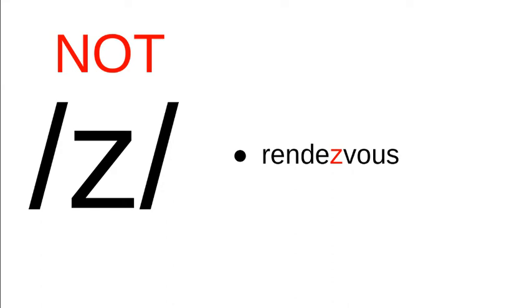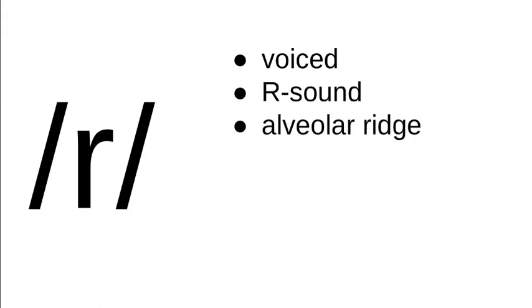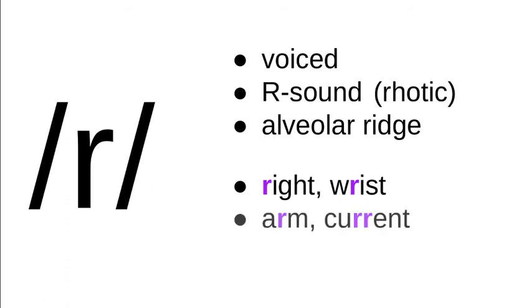The next sound, lowercase r represents the r sound. This sound is voiced and I'm calling it an r sound, and it's produced at the alveolar ridge. There are several r sounds across the world's languages. The technical term for r sounds is rhotic, but for our purposes calling it an r sound is just fine. In English this sound is usually represented with an r like in right and wrist and arm and current and purr and core.